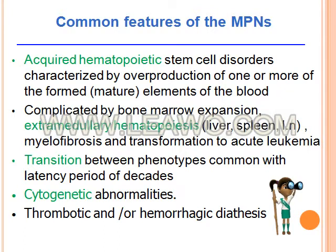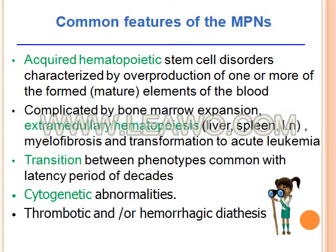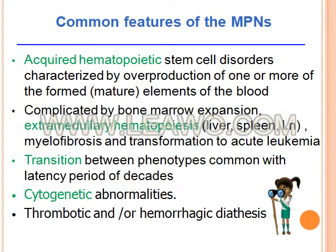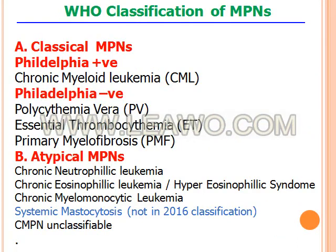They could be complicated by myelofibrosis or transformation to acute leukemia. Transition between different phenotypes of myeloproliferative neoplasms can also occur. They harbor cytogenetic abnormalities and can present with thrombotic or hemorrhagic disease.